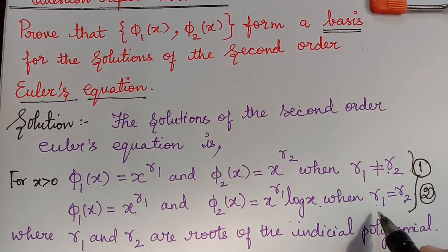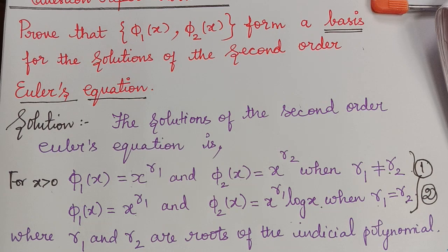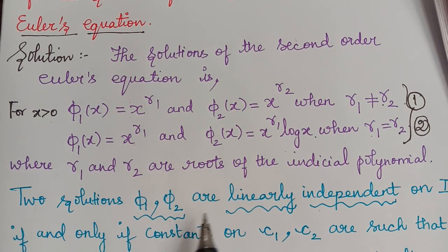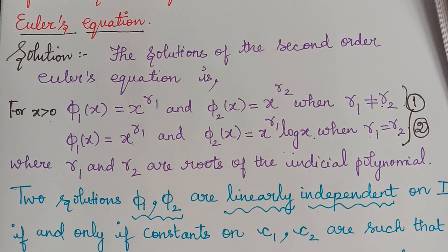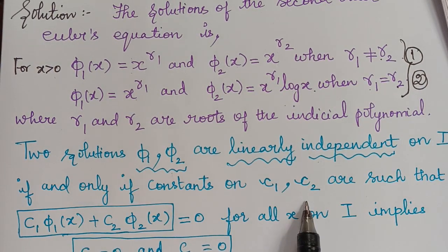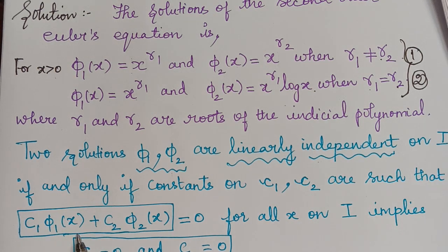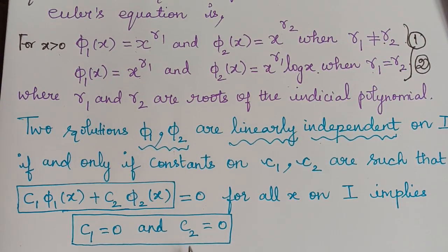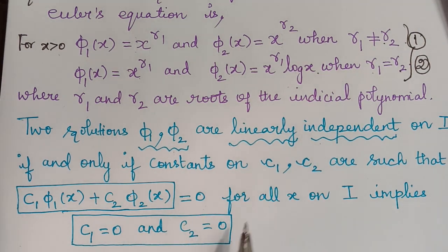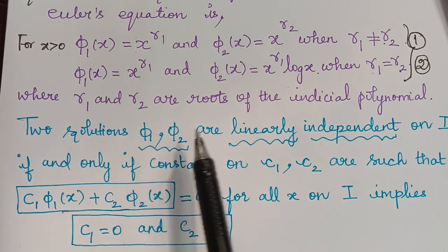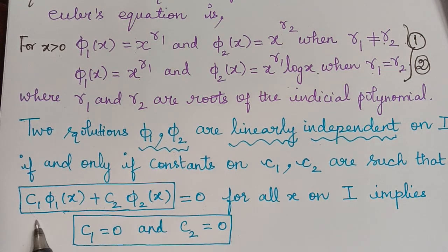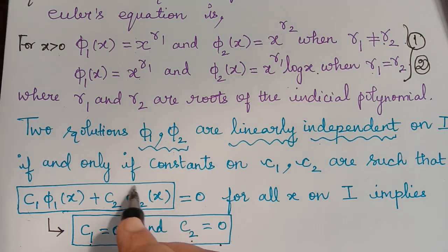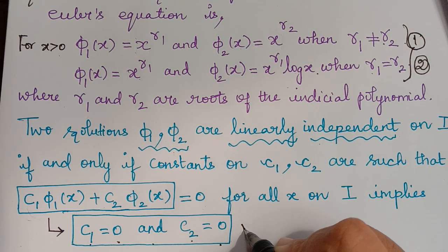Case 1 will be r₁ ≠ r₂ and Case 2 will be r₁ = r₂. Two solutions φ₁ and φ₂ are linearly independent on an interval I if and only if constants c₁, c₂ such that c₁φ₁ + c₂φ₂ = 0 for all x on I implies c₁ = 0 and c₂ = 0. We are going to prove that c₁ = 0 and c₂ = 0 on the interval where x ≠ 0.